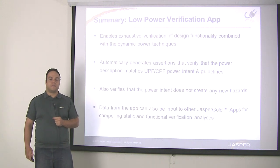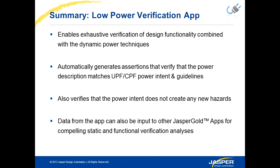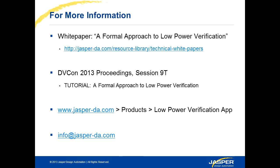In summary, the Low Power Verification app enables you to exhaustively verify that the low power introduction — the power intent introduction on your design — did not break any of its functionality. This is done first by creating automatic checks and assertions from the power intent, and then using your own user-defined assertions to ensure that no new hazards or bugs have been introduced by the power itself. Any data generated from the Low Power Verification app can and should be leveraged in our other Jasper applications, such as formal property verification. For more information, please visit our website to find our white paper, and you can also find more information in the DVCON 2013 proceedings by looking for the Jasper Low Power Tutorial.